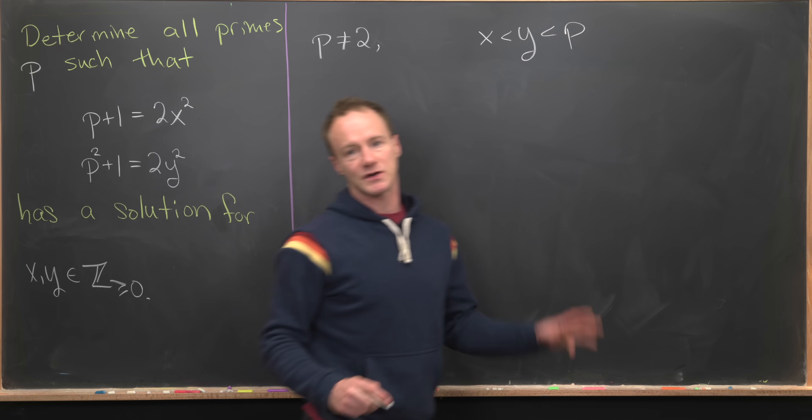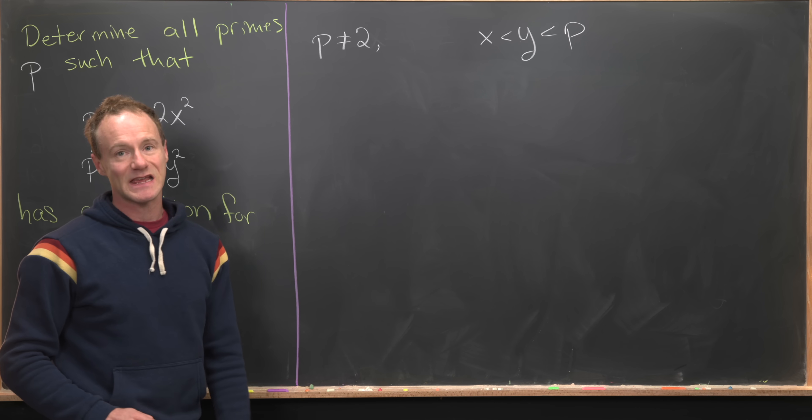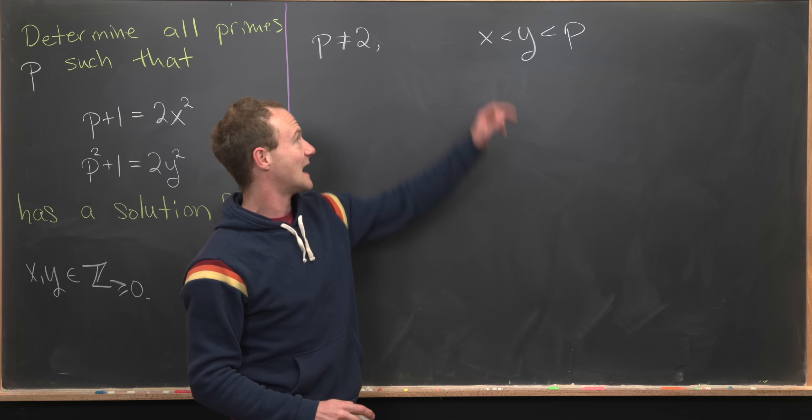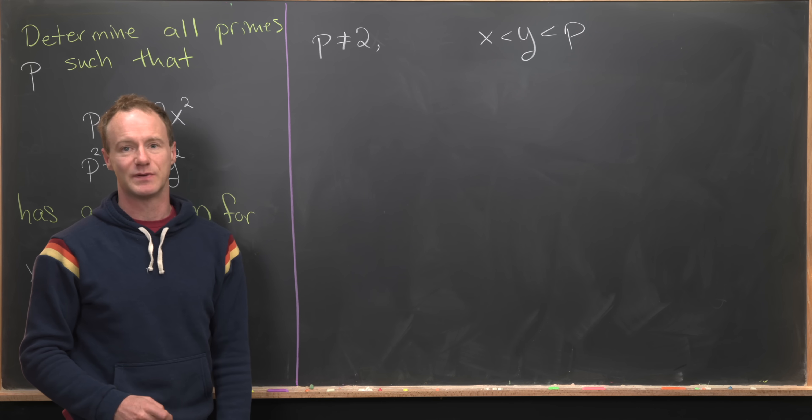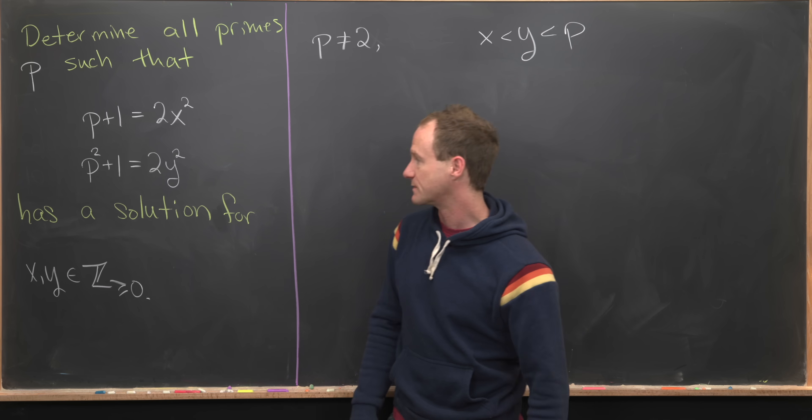So let's see where we are. We know p is not an even prime, and x is less than y is less than p. Now we're going to start doing some calculations.